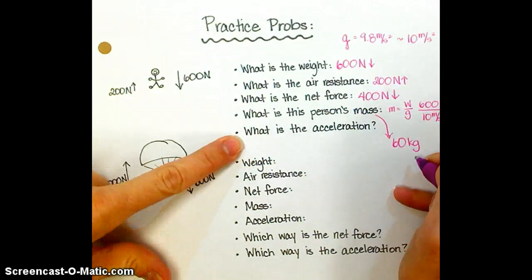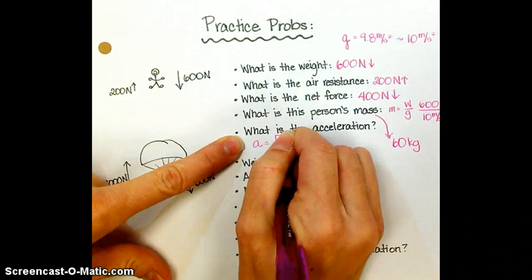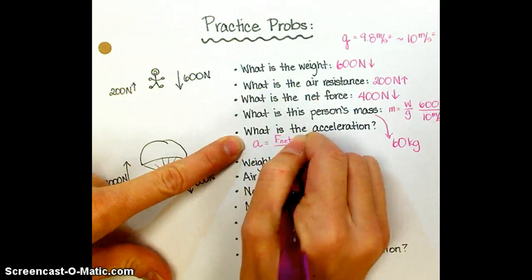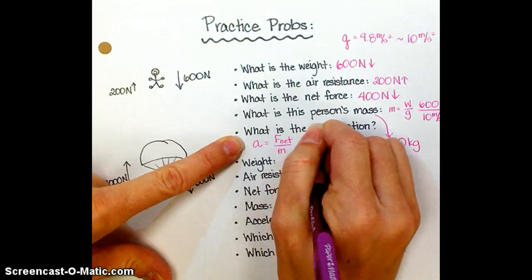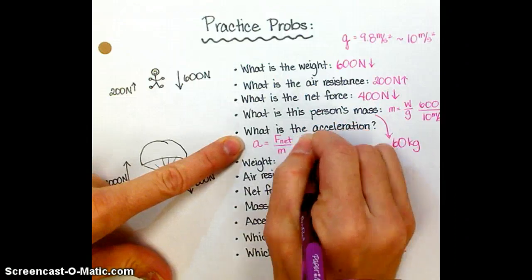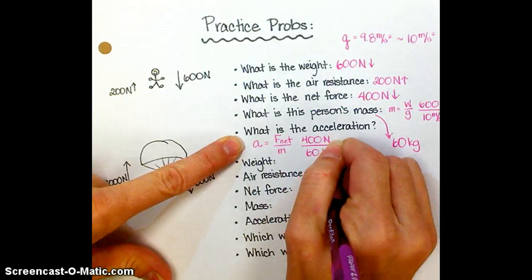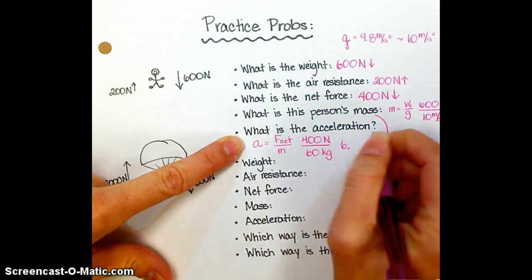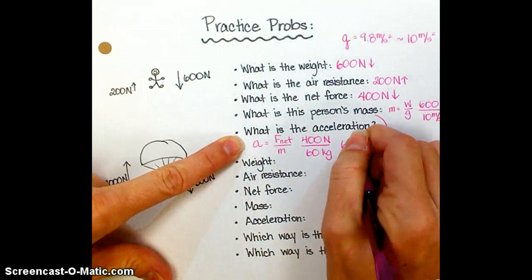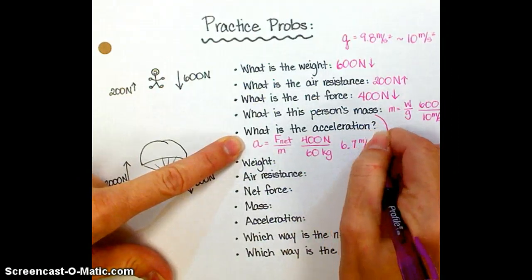So how can we calculate this person's acceleration? We need to know net force and divide it by mass. The net force is 400, the mass is 60. When you divide those out, you get 6 and 2 thirds, or 6.66 repeating, so we're going to round that off to 6.7 meters per second squared.